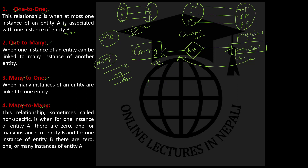Another example: suppose 'bank' is one entity set and 'CEO' is another entity set. Every bank has only one CEO, and a person can be CEO of only one bank. This is a one-to-one relationship.